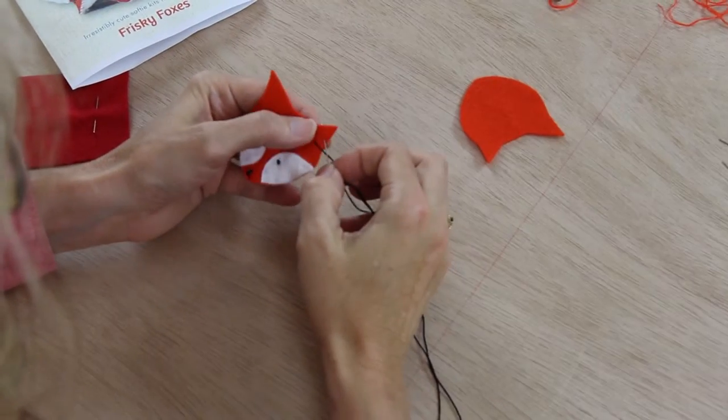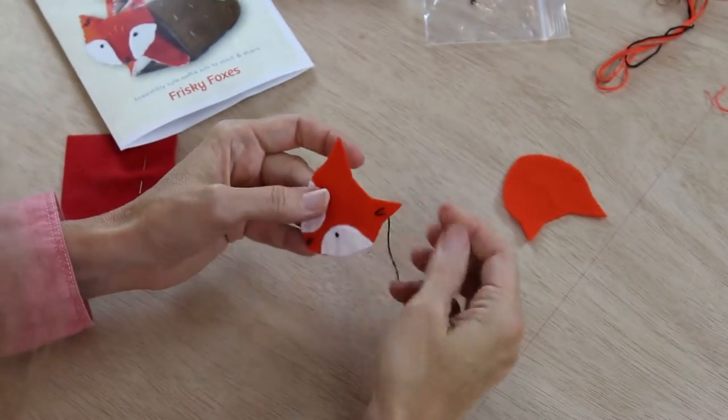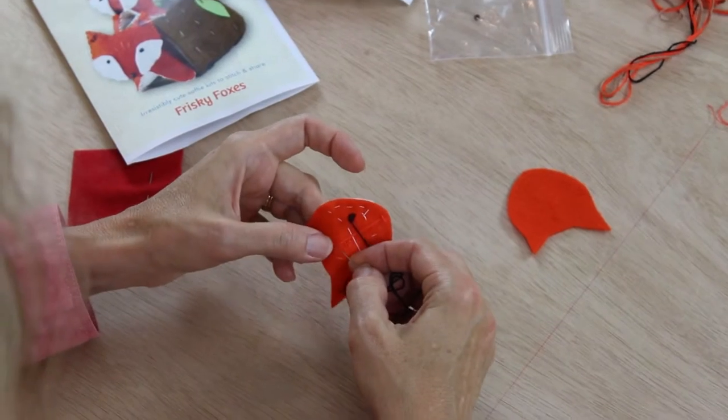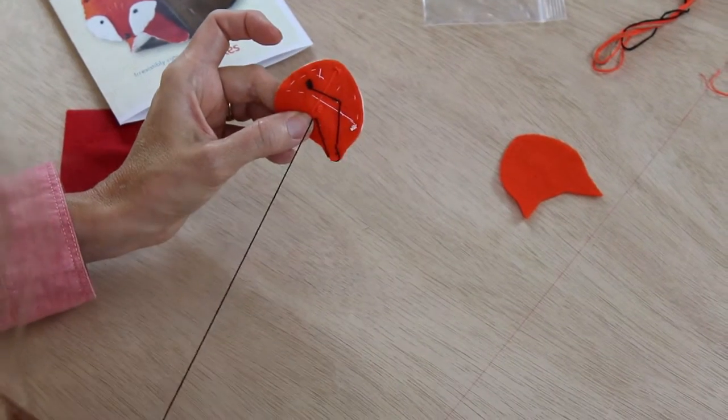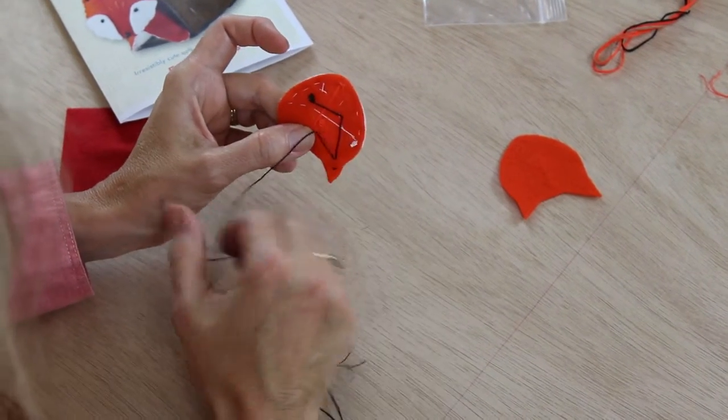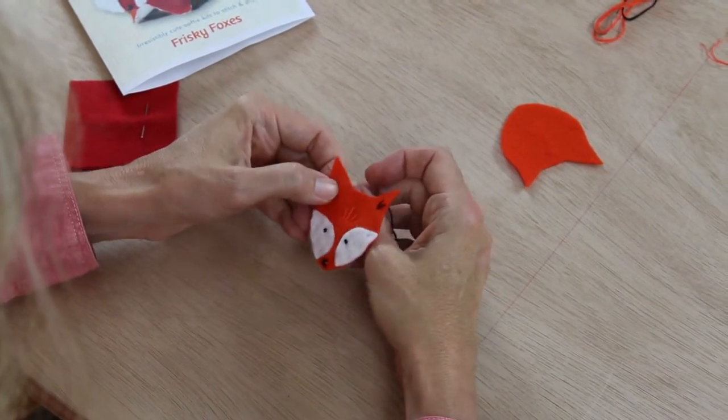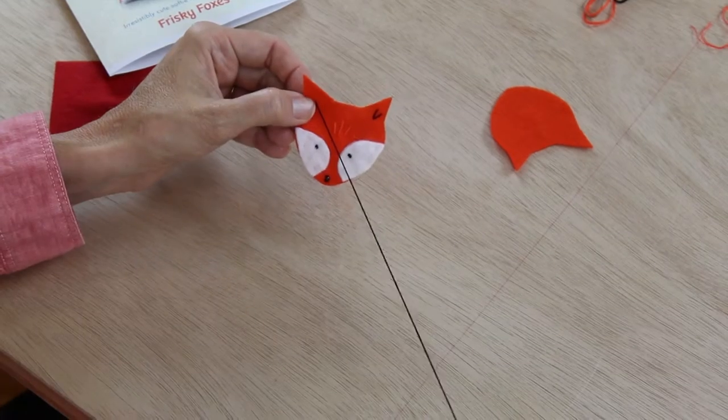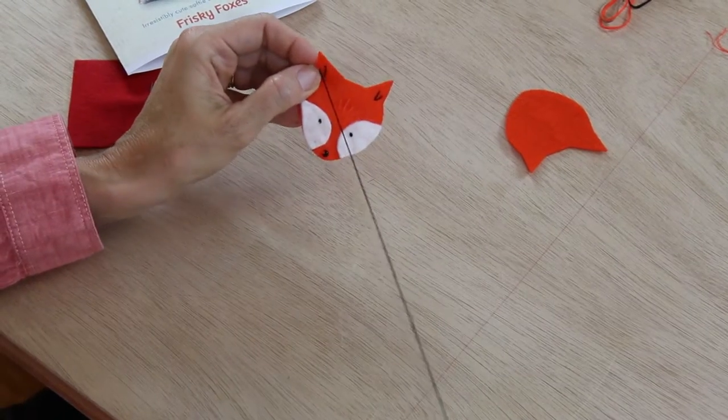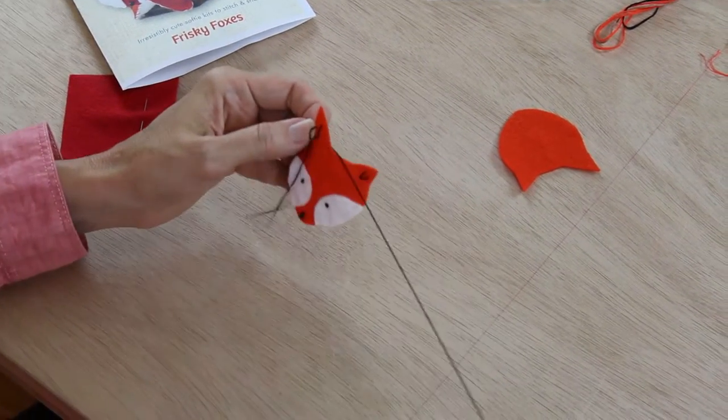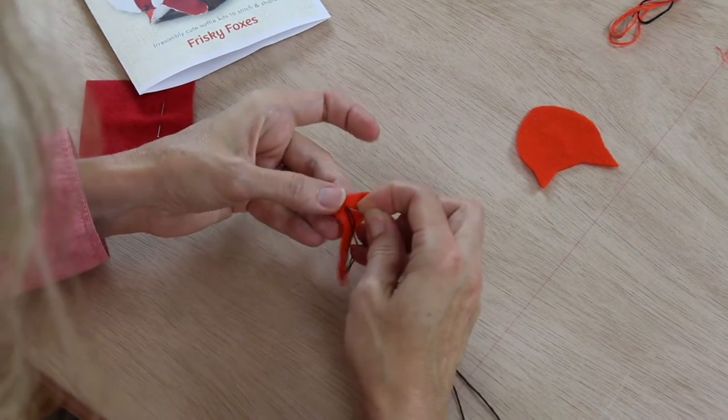So we're going to make a little v-shaped stitch in his ear. There's one. And then I'm going to just attach the thread just a little bit through here because if you bring it across way to the other ear, it's going to distort the felt. So that kind of anchors it. It's a little trick. And I'm just going to make the other v in the other ear. And then we're just going to knot the thread.